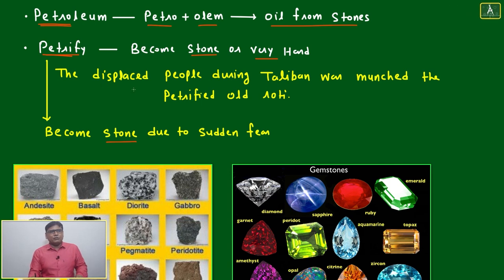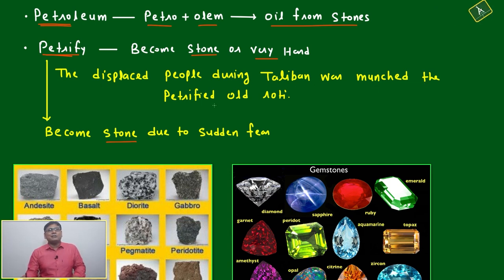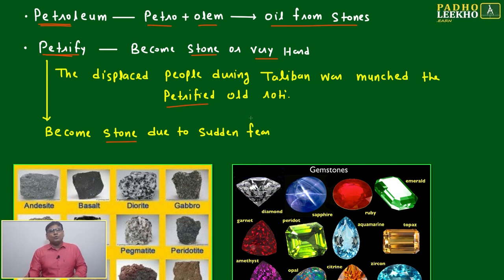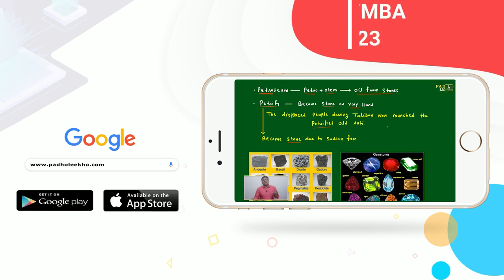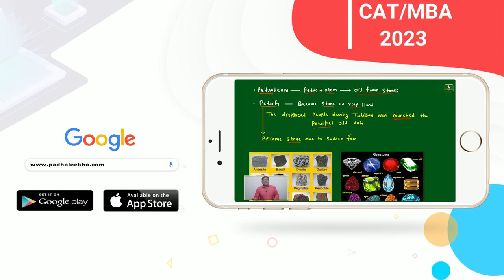One very sentimental and emotional example sentence: displaced people during the Taliban war munched the petrified old rotis. Maybe from the last five or six days the roti was there — it had become too hard, a stony type — and they were trying to munch it because they don't have food.